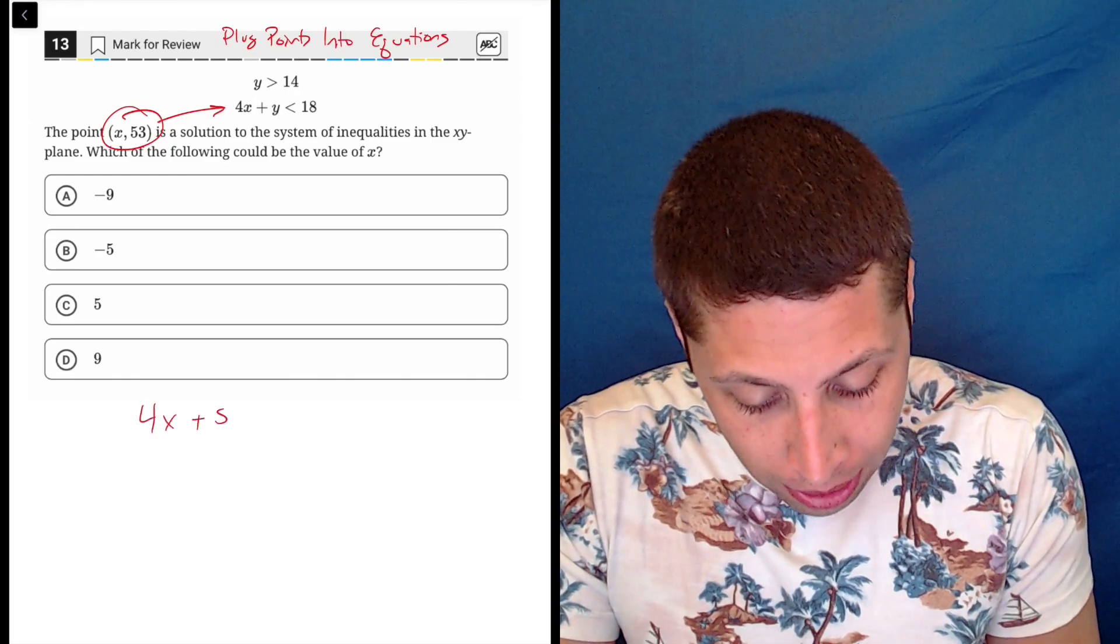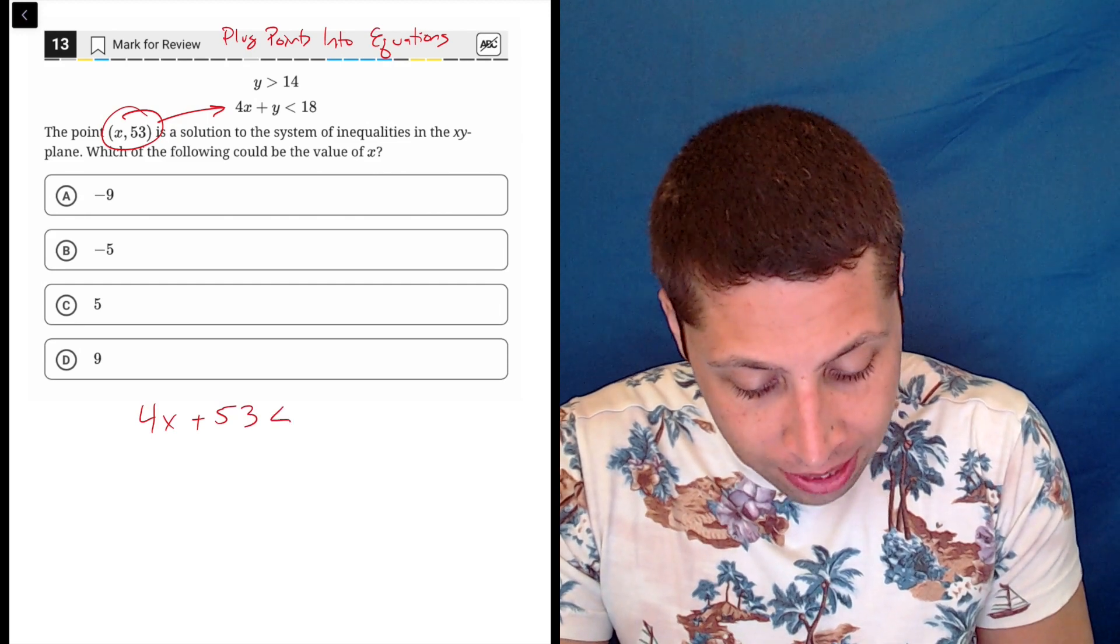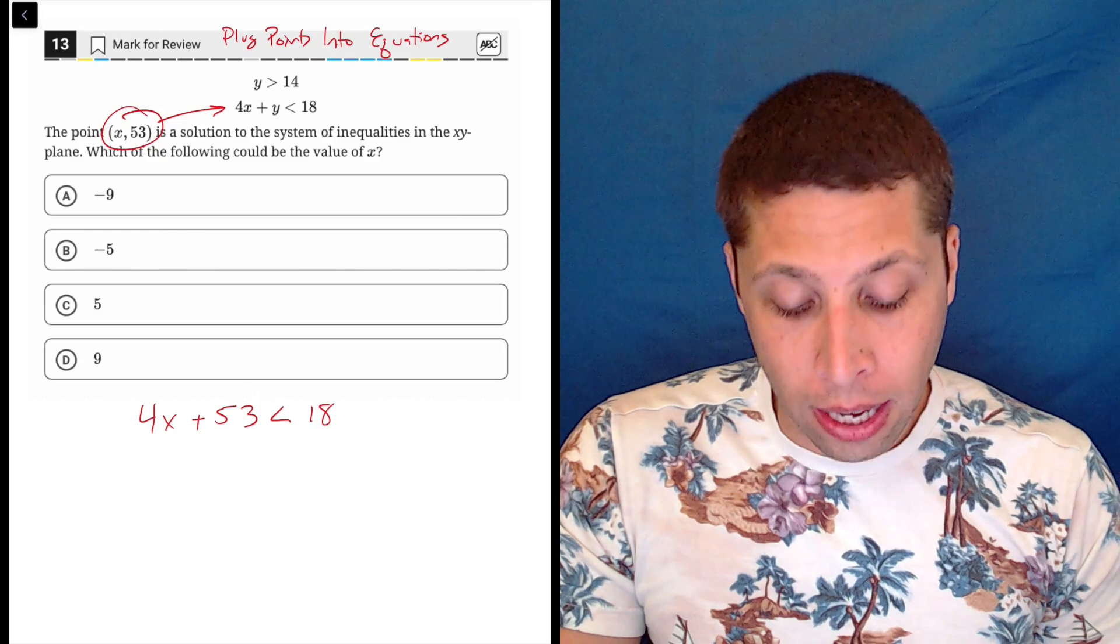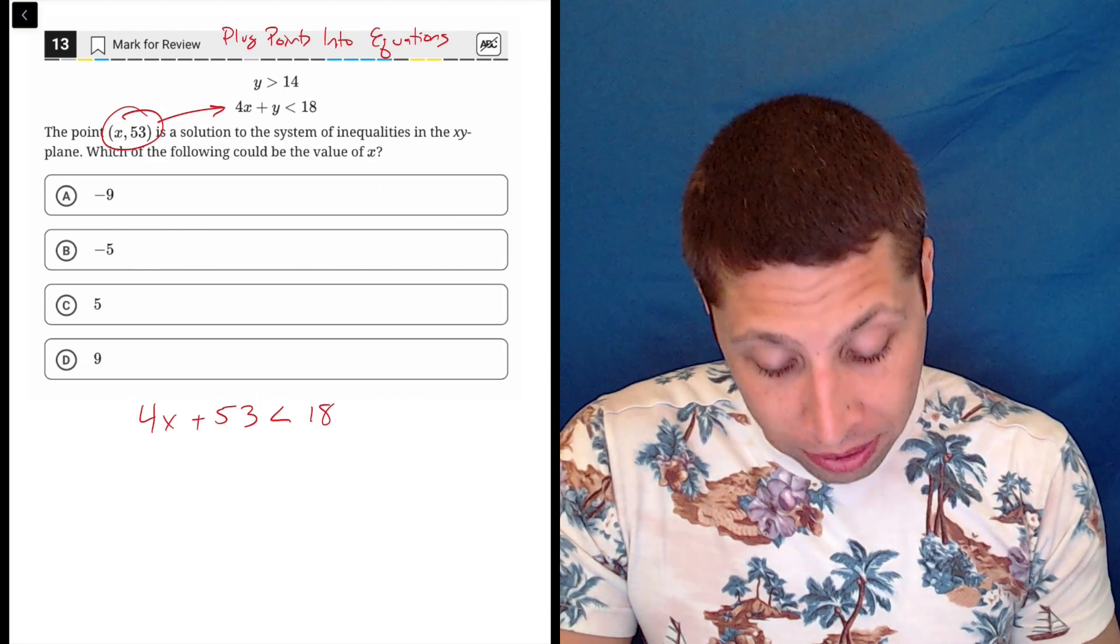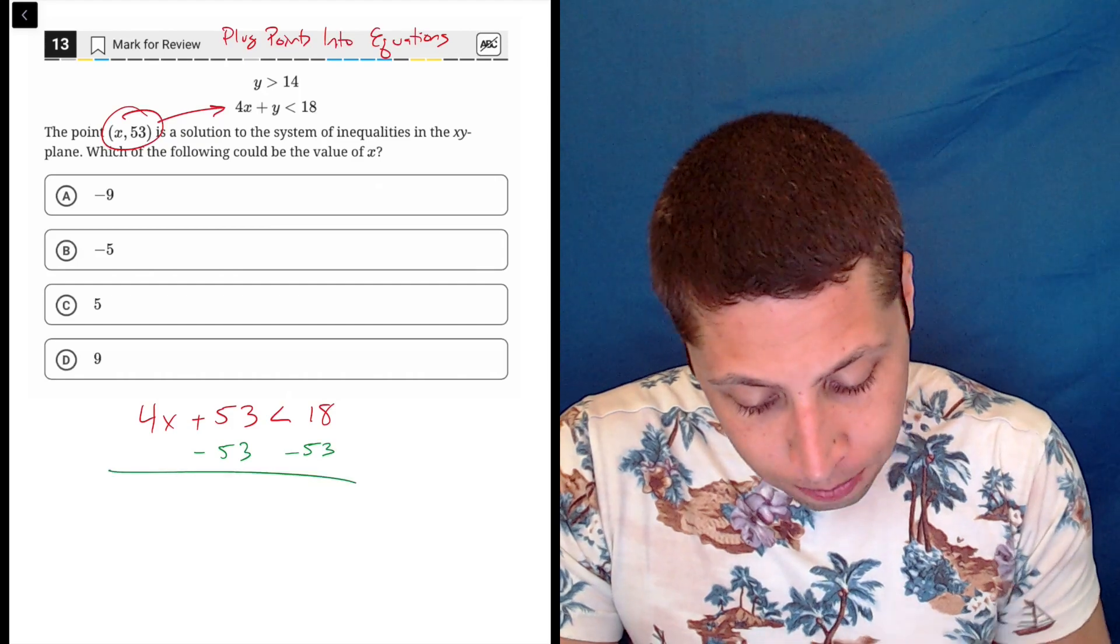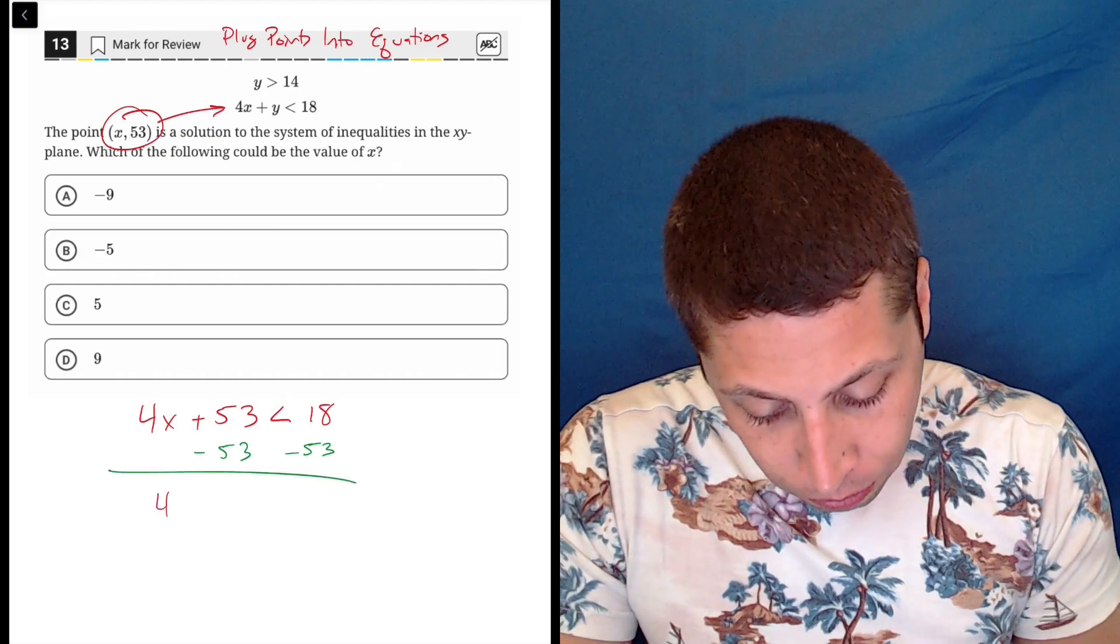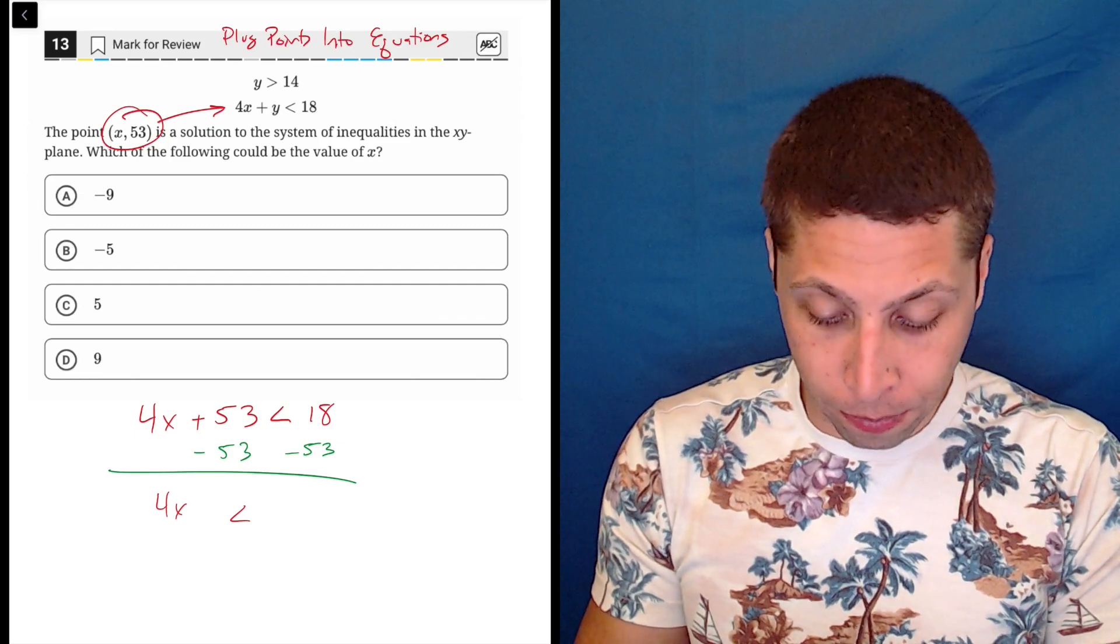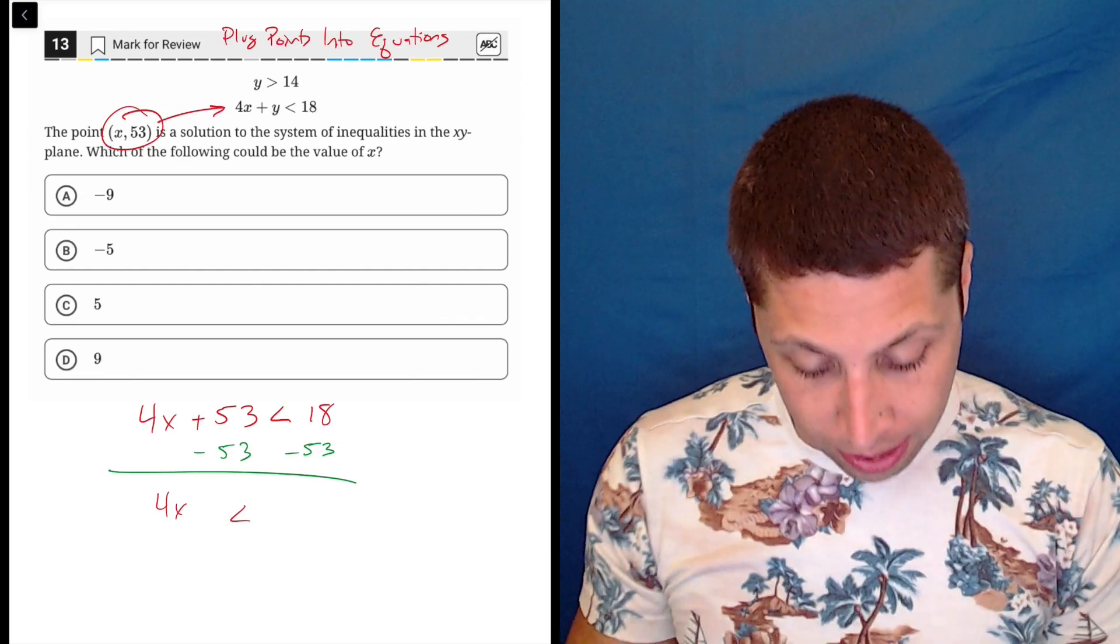So 4x plus 53 is less than 18. So it doesn't matter that it's an inequality because the rules of algebra are basically still the same, right? So we subtract 53 from both sides. And we will get that 4x is less than, let's do that in our calculator, 18 minus 53 is negative 35.